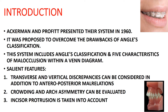The salient features of Ackerman and Proffit's classification include: malocclusion is considered in all three planes — transverse, vertical, and antero-posterior (sagittal). Crowding and arch asymmetry can be evaluated, as well as whether the arch is asymmetrical. Incisor protrusion is also taken into account.